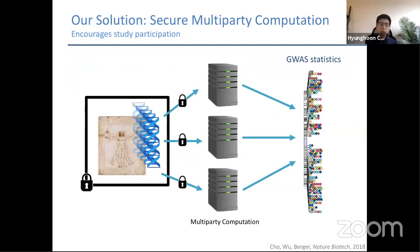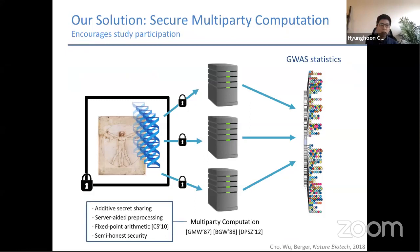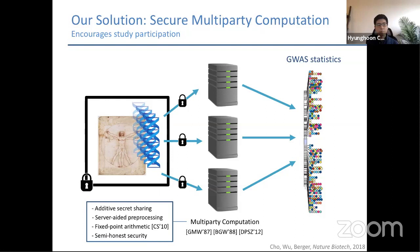Our proposal was to use MPC to allow researchers to analyze genomic data and run GWAS studies without giving anyone direct access to these sensitive genomic data sets. We adopt an MPC setting that is fairly standard in the field, based on additive secret sharing with a server-aided pre-processing model, where we introduce a trusted dealer that generates correlated randomness. We also use fixed-point arithmetic subroutines to handle fractional numbers in our statistical analyses. Our initial protocol is based on semi-honest security, but it can be extended to active security using many techniques discussed at this workshop.